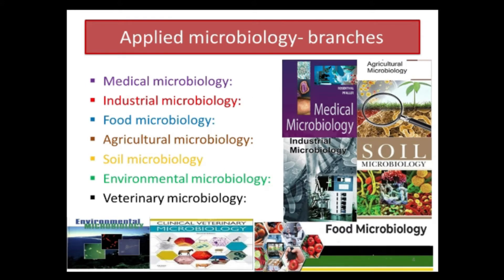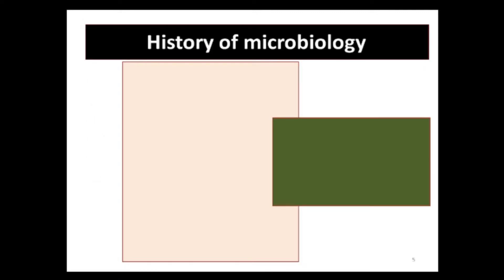Agricultural microbiology deals with plant-associated microbes and plant and animal diseases. Soil microbiology is the study of microorganisms in the soil, their functions, and how they affect soil properties. Environmental microbiology is the study of the composition and physiology of microbial communities in the environment. Veterinary microbiology is mainly concerned with microbes responsible for causing diseases in animals. There are other branches also, like dairy microbiology and microbial biotechnology.